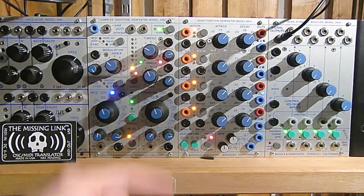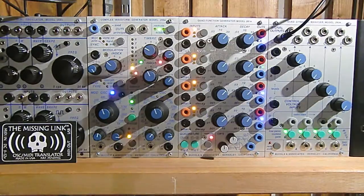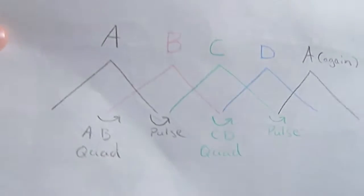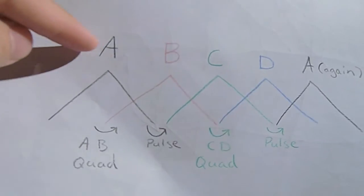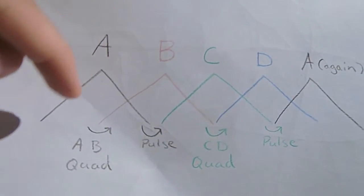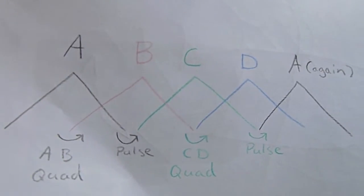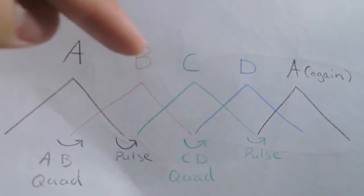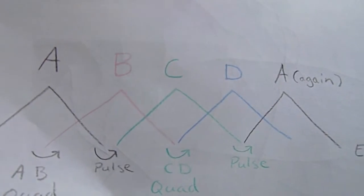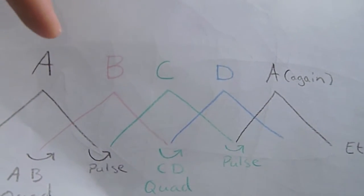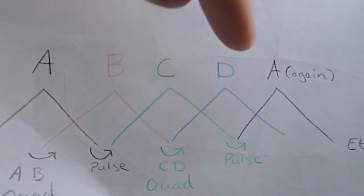I'm going to patch the pulse outputs to the trigger inputs so that I make up a chain where A and B are set in quadrature mode so that A triggers B, then I take the pulse out of A and trigger C, so that I get a continuous loop going from A through B, C, D, and then back to A again.